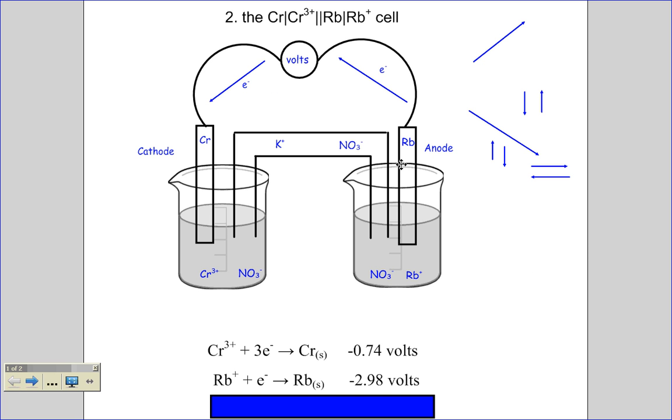I can also say that the positive ion in the salt bridge always heads towards the cathode, and the negative ion in the salt bridge always heads towards the anode. In the cathode, the piece of metal, the chromium, is going to become heavier because as the electrons arrive, that's going to cause a momentary negative charge in this piece of chromium metal and it will attract the chromium ions.